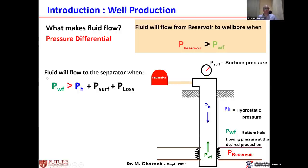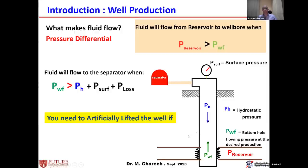These three main components must be overcome by the bottom hole flow pressure for the well to flow. Generally speaking, the bottom hole flow pressure is a function of production. From the well inflow performance, when production increases, the bottom hole flow pressure decreases. So if I want more production, the bottom hole flow pressure goes lower. If it's not higher than those three components, the well will not produce — and in that case, you need to artificially lift it.